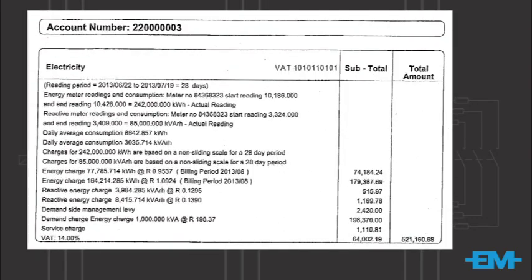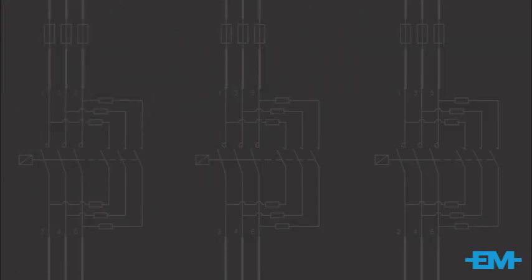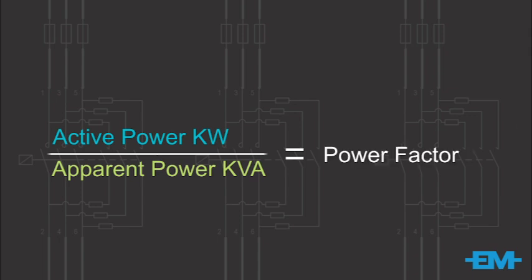Industrial and commercial businesses pay for electricity by the kilowatt and also pay a demand charge expressed as KVA. In an alternating current or AC electrical supply, power factor also comes into play. Power factor is the ratio between the actual power being used and the apparent power being drawn.